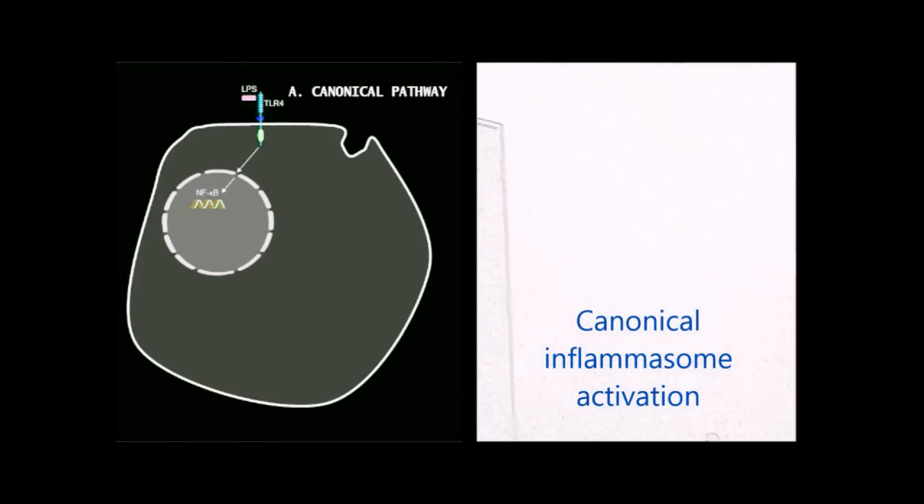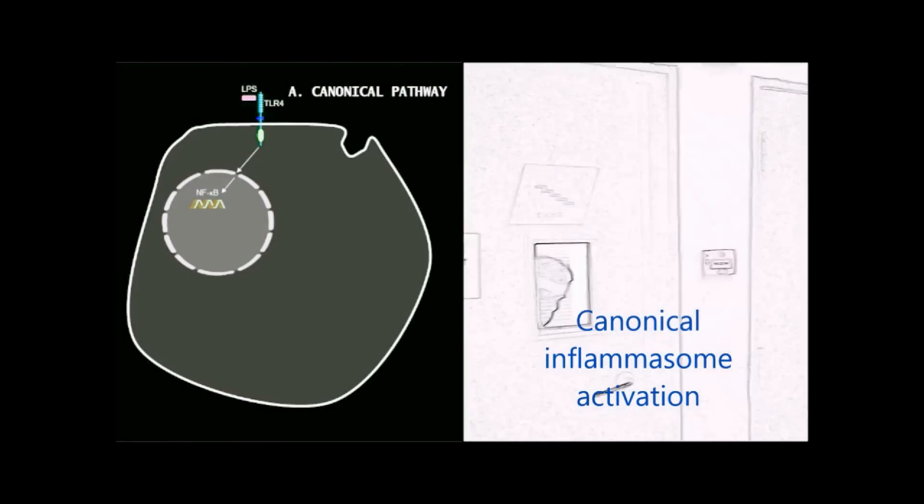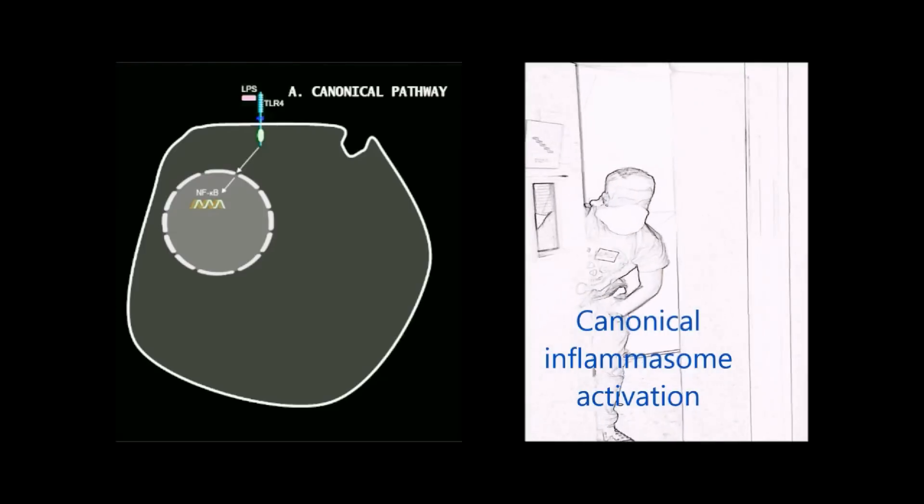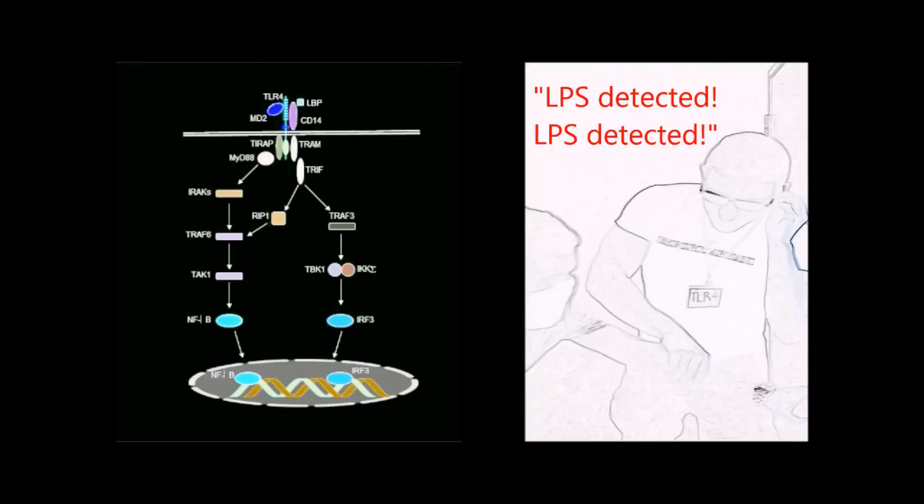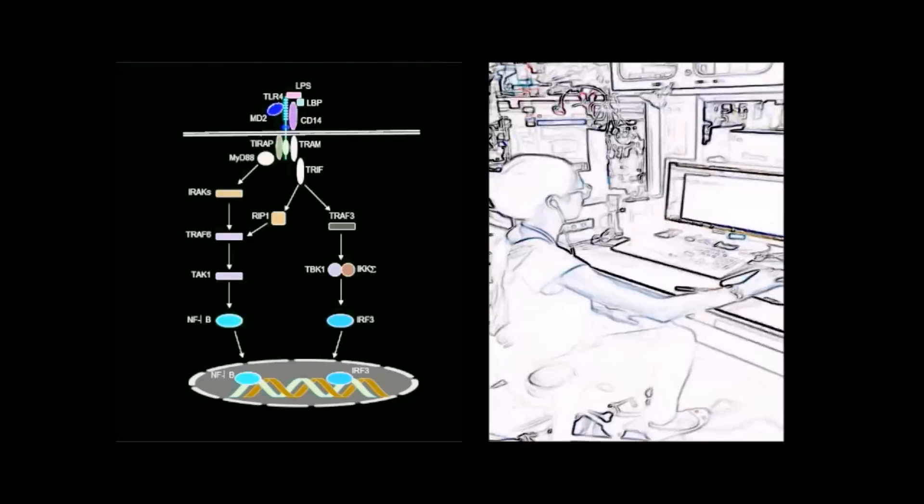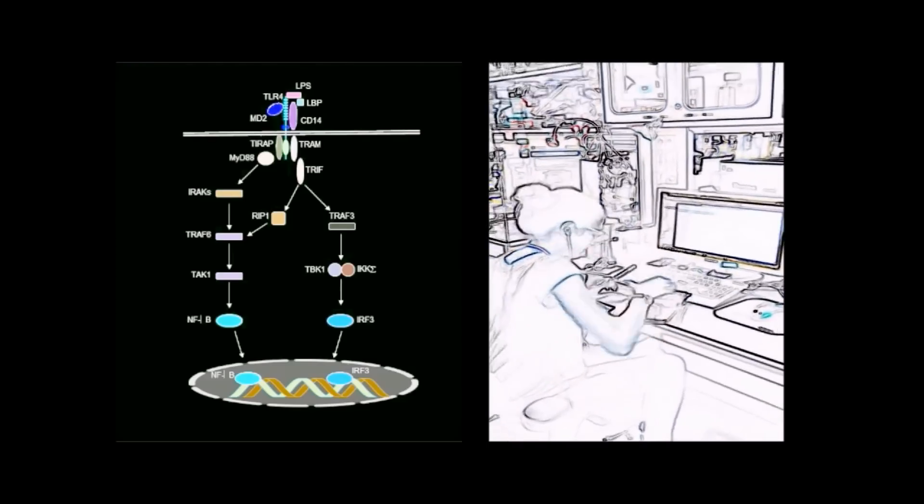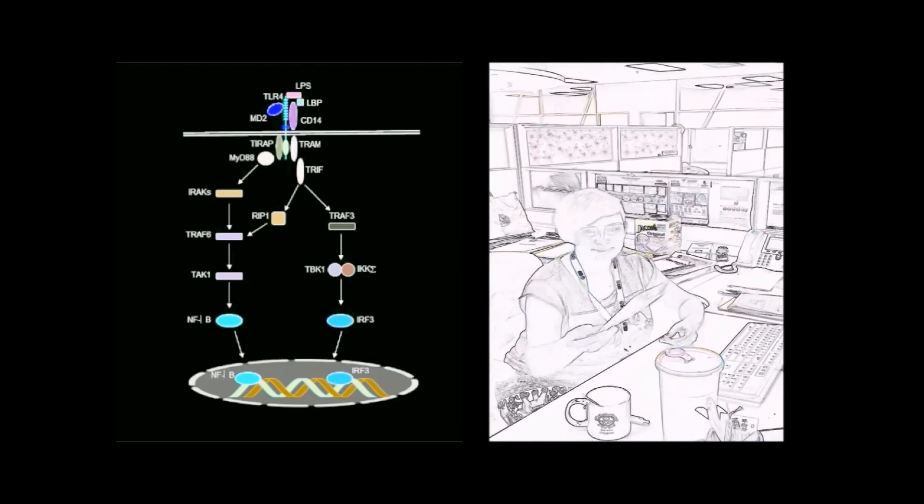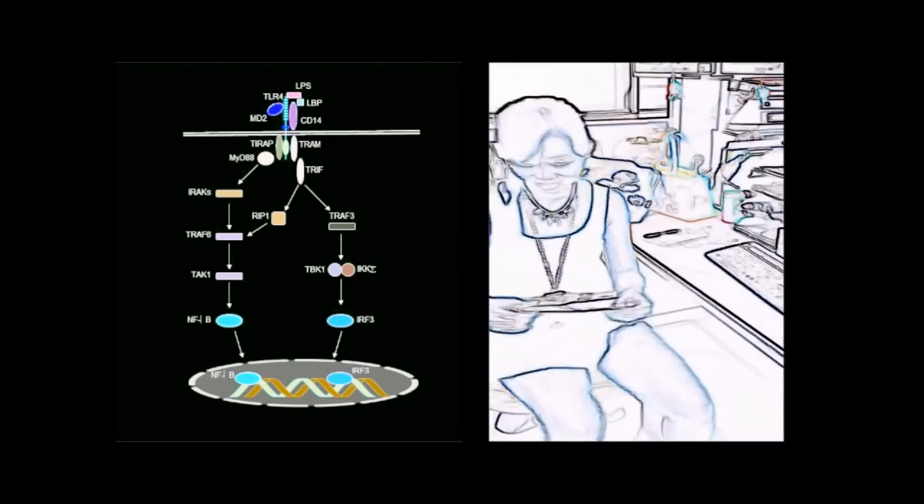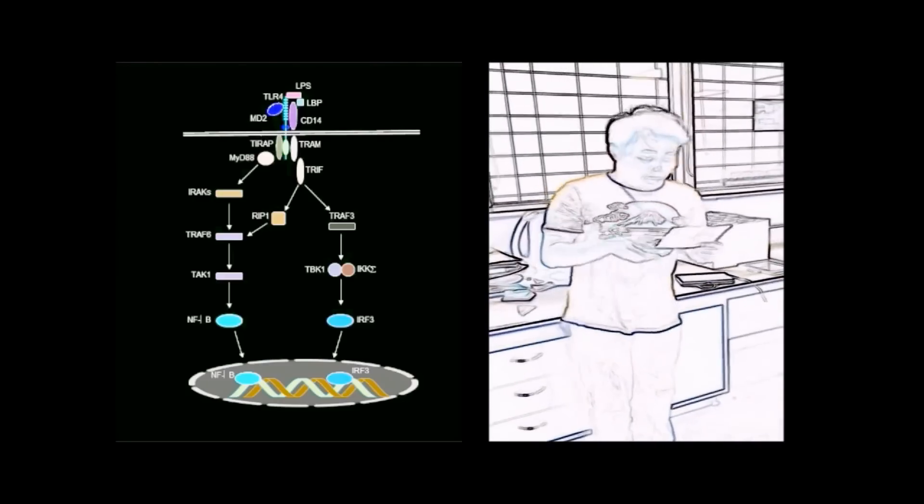The canonical pathway is activated when a pathogen is detected. When lipopolysaccharide LPS binds the toll-like receptor 4, this receptor activates the downstream signaling pathway, either MyD88-dependent or independent, which in turn passes a signal all the way to the nucleus.